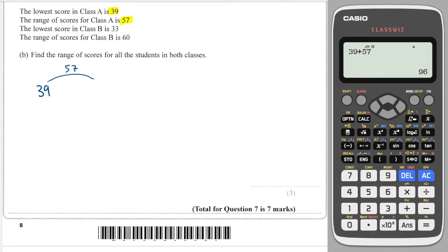So that's the largest score in Class A. In Class B, we have 33 and the range is 60. So the lowest is 33 and the range, the gap between the biggest, is 60, which means that the highest must be 93. And then it says find the range of scores for all students. Well, that's the biggest score overall minus the smallest score overall, so it's 96 minus 33, which is 63.